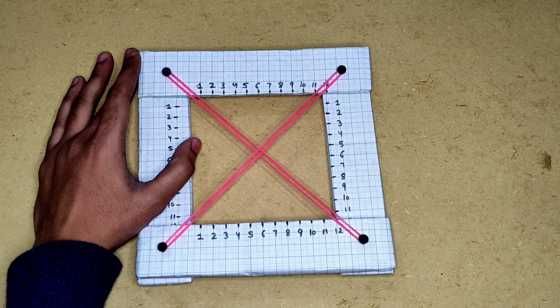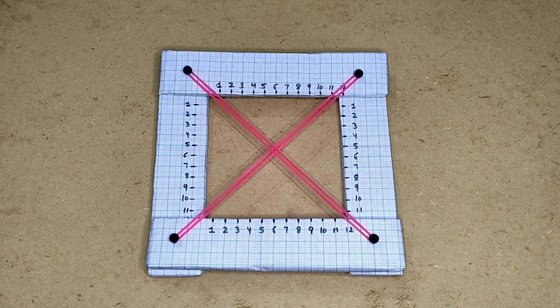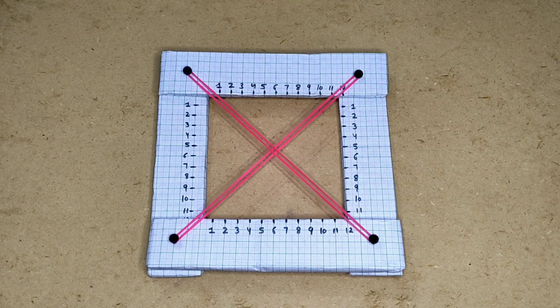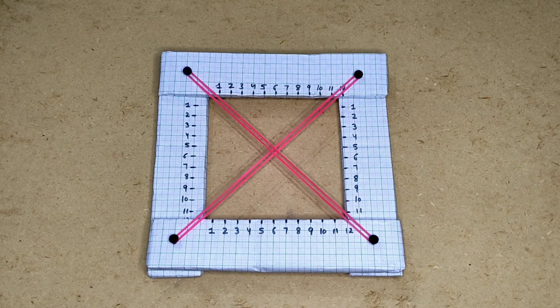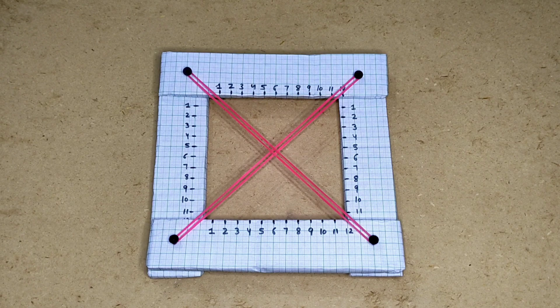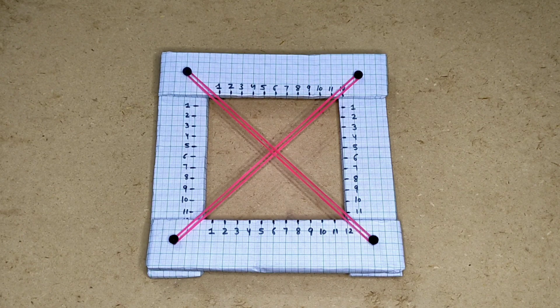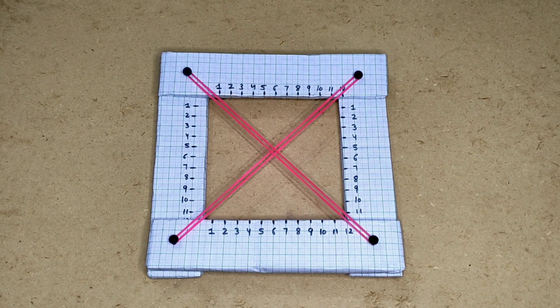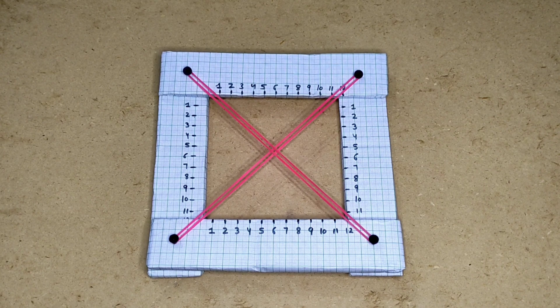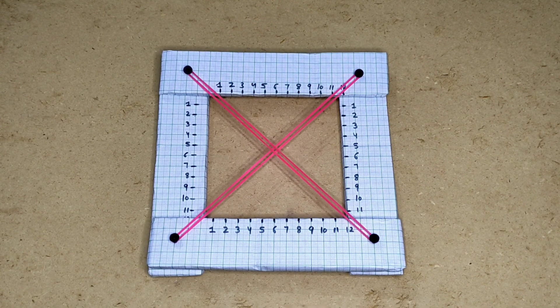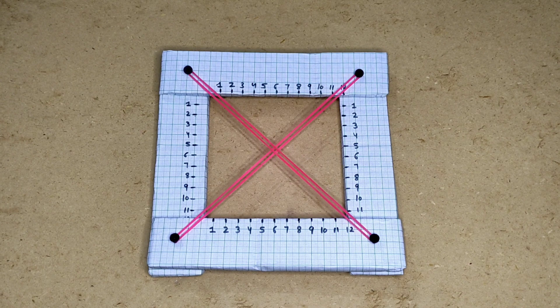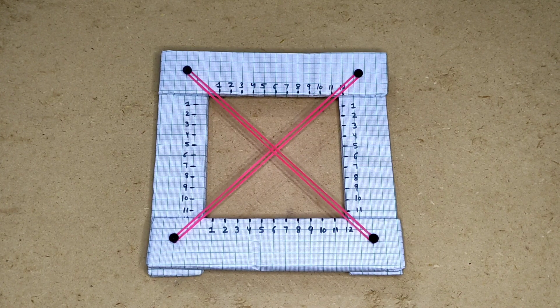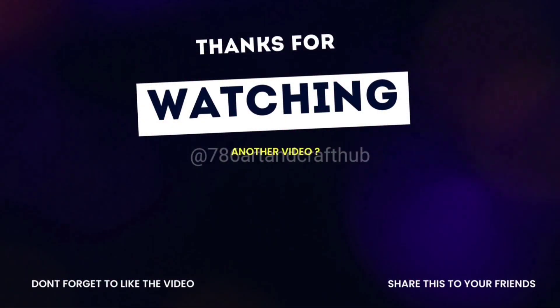So students, I hope you understand the concept of congruency and the first rule of congruency of triangles, that is SSS. So in the next video, we will study the SAS rule and why SSA and ASS rule doesn't exist and why it is not valid for congruency of two triangles. So I see you in the next video. Bye guys.